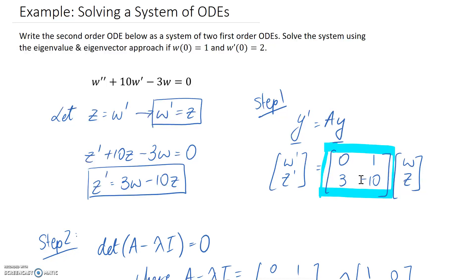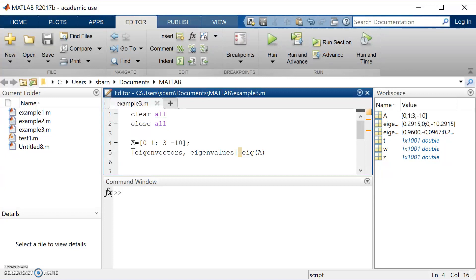So the matrix is 0, 1, 3 and negative 10. And what you're going to notice when I jump across here is that I have defined indeed that matrix A, as you can see.